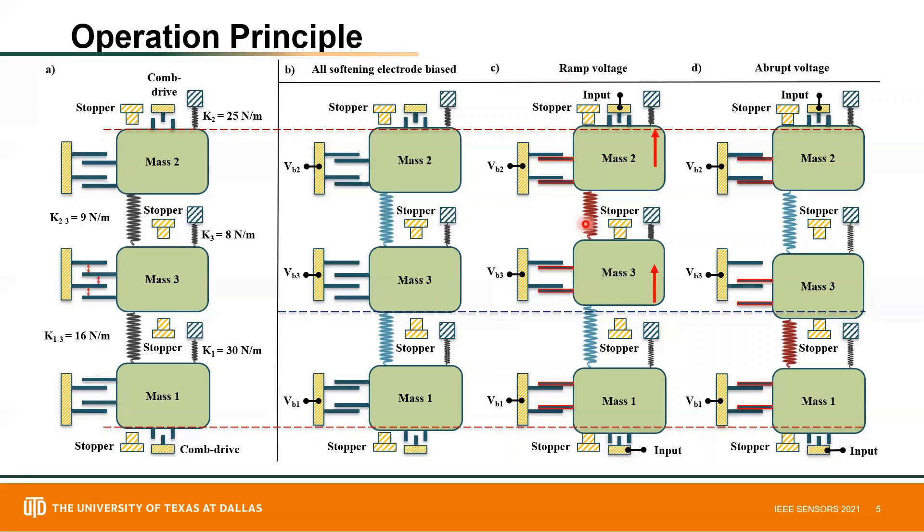The coupling tether between mass two and mass three causes mass three to move upward. If the softening electrode bias of mass three is large enough, mass three will be pulled out of stability and pulled in upward, indicating a gradually increasing voltage.